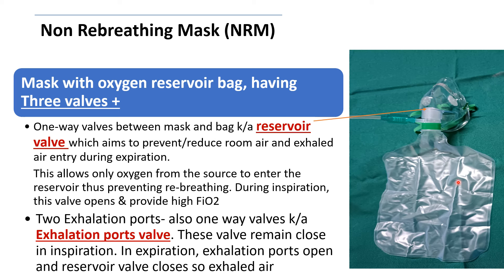This bag is connected to the oxygen source via oxygen tubing. When the reservoir valve is closed during exhalation, oxygen from the source fills the reservoir bag. This valve allows only oxygen from the source to enter the reservoir bag, thus preventing rebreathing. During inspiration, this valve opens to provide high FiO2.